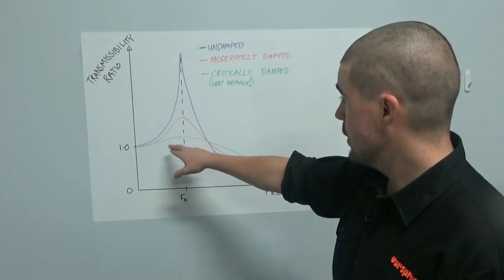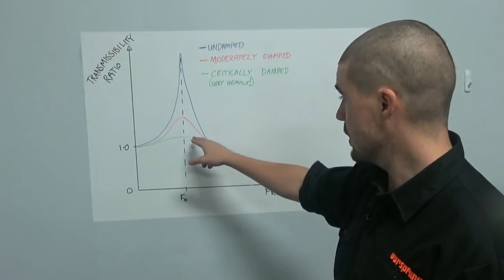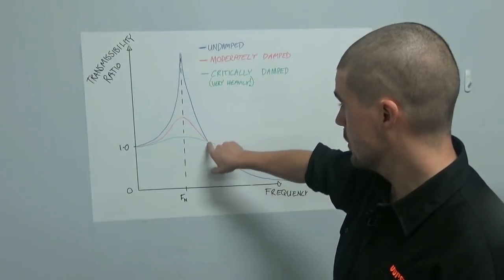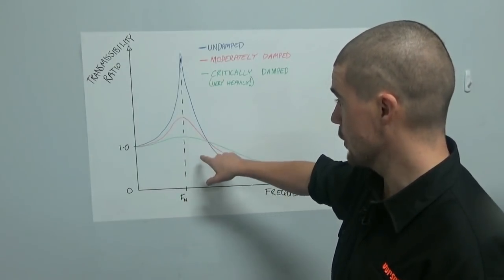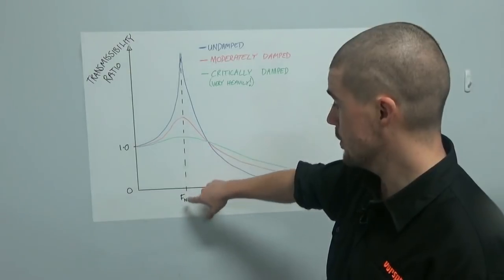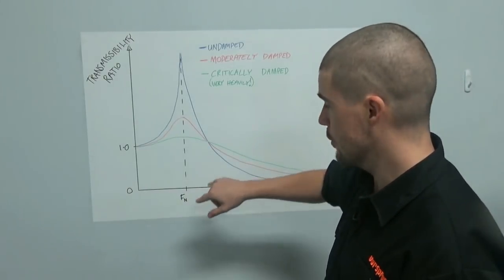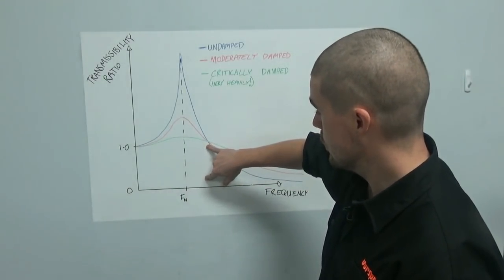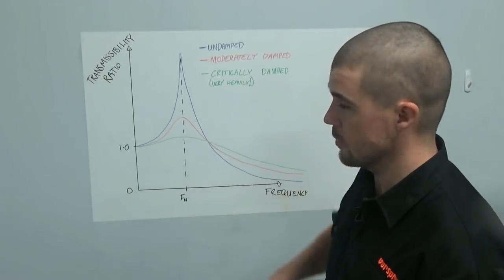As the frequencies get higher, that transmissibility begins to drop. Once you get to the square root of 2 times that natural frequency, this is referred to as the undamped natural frequency, by the way. So once we get to square root of 2 times that natural frequency, then what happens is we get back to that one-to-one ratio.